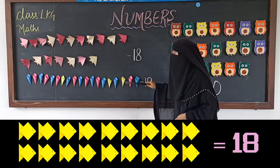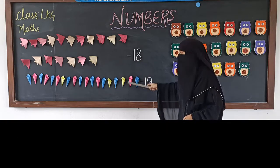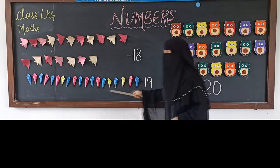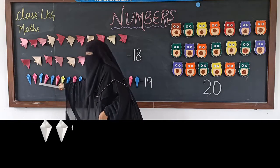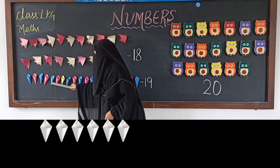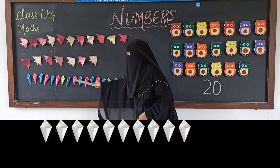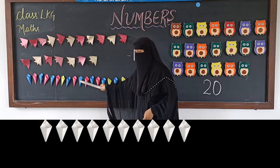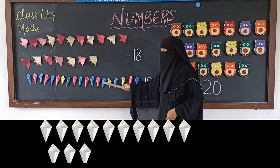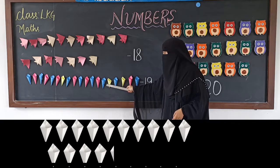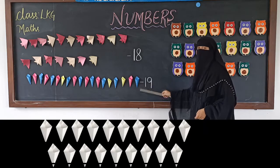Now let us count which number comes after 18, okay? Let us count the cones here. 1, 2, 3, 4, 5, 6, 7, 8, 9, 10, 11, 12, 13, 14, 15, 16, 17, 18, 19.